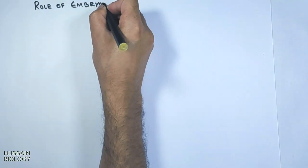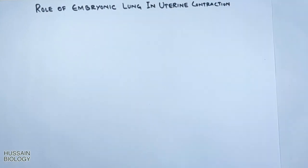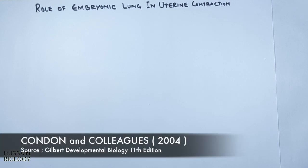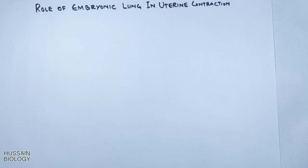In this video we will be discussing the role of embryonic lung in uterine contraction, including the role of the immune system. We know mammalian birth occurs very soon after lung maturation. Some evidence suggests that the embryonic lung may actually signal the mother to start delivery. It was Condan and his colleagues who showed that surfactant protein A from the lungs plays an important role in this process.